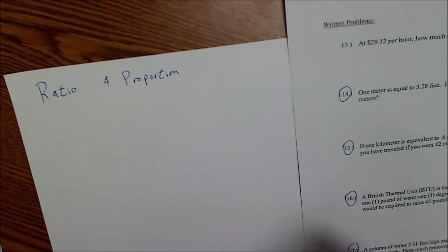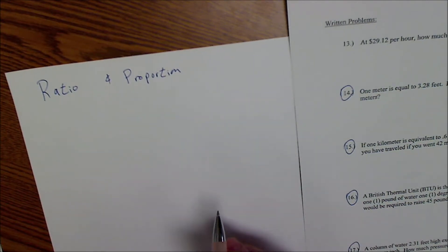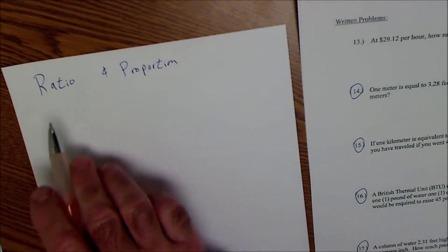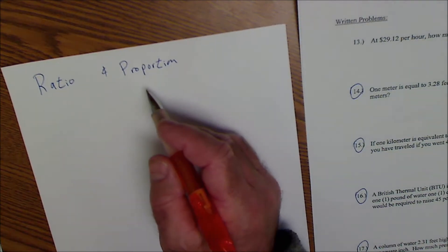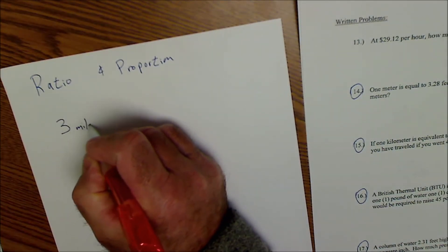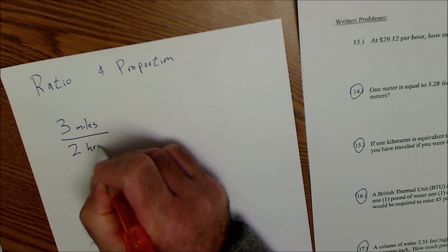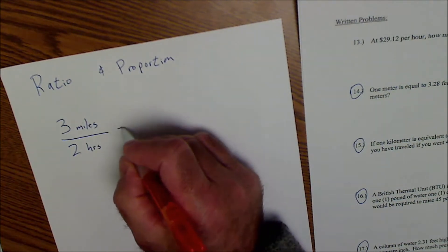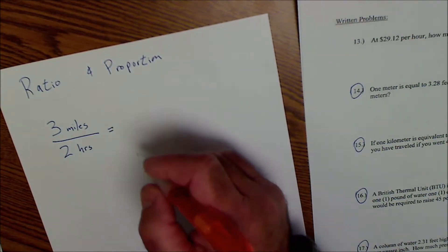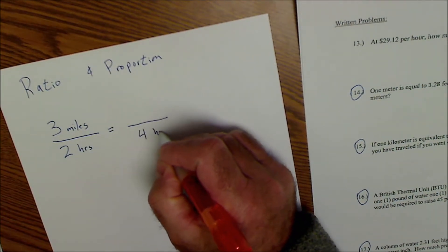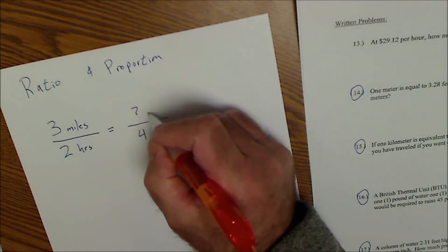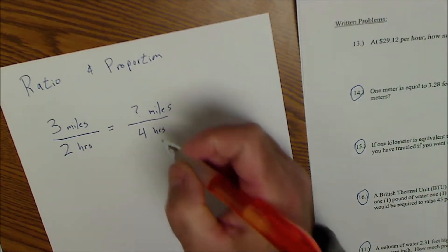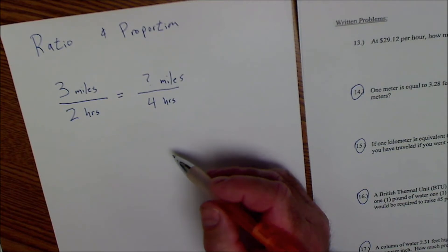Before I go over these problems, I want to go over a little bit about ratio and proportion because all four of these problems are exactly the same — they're setting one ratio equal to another ratio, which is a proportion. For example, if I go three miles in two hours, that's a ratio because it's one unit over another unit — a rate of speed, miles per hour. Then if I set that ratio to another ratio, say I travel four hours and want to know how many miles, that's a proportion.